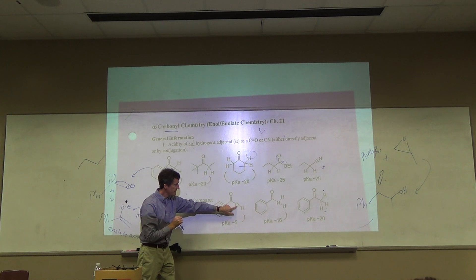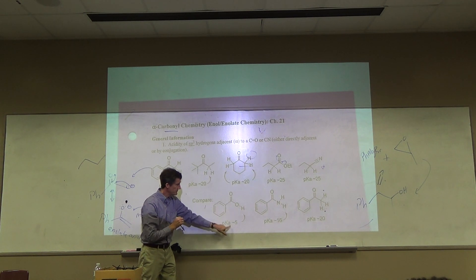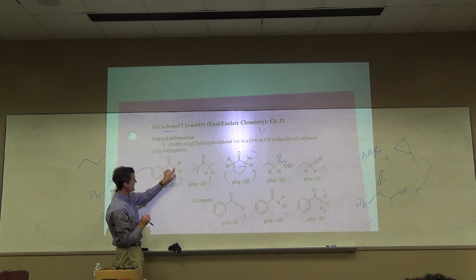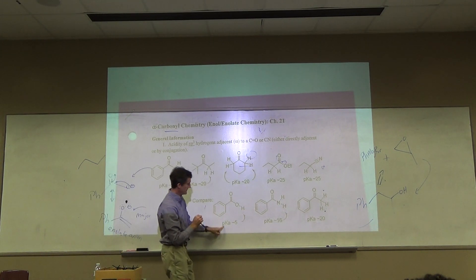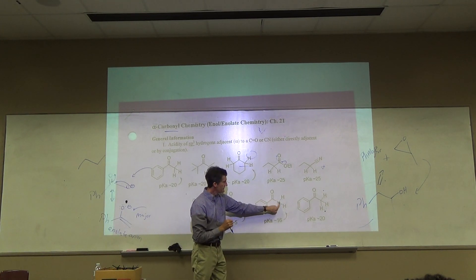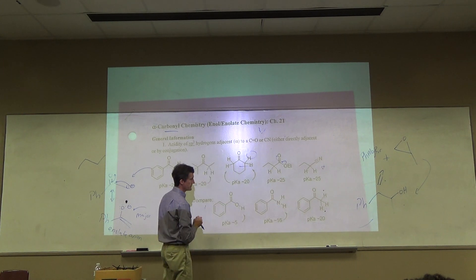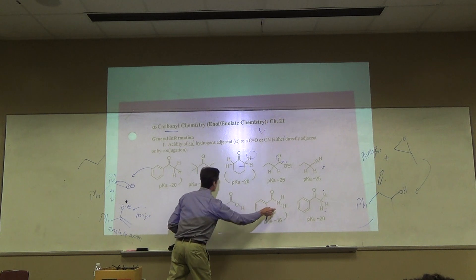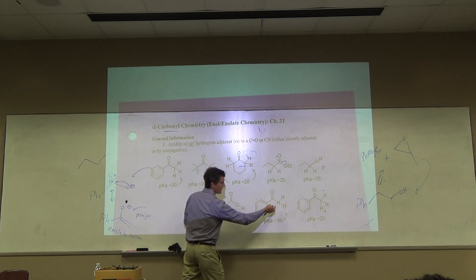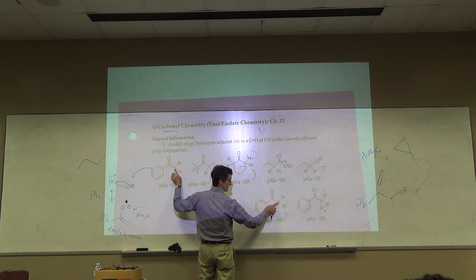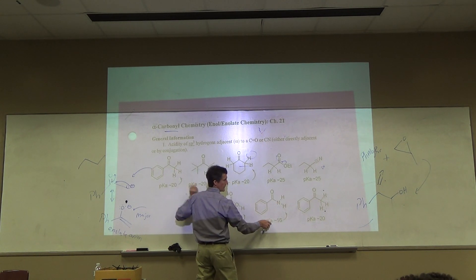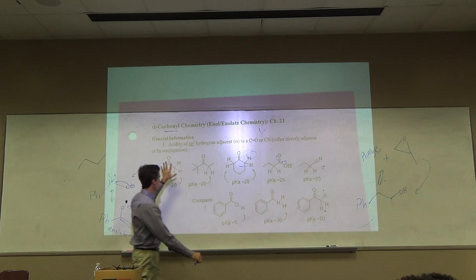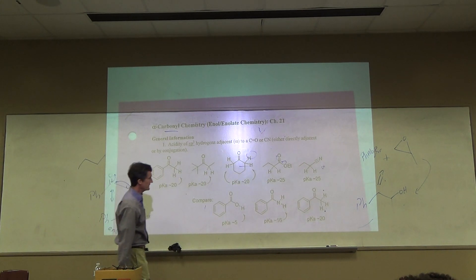Making anion here, you can also do, but it's not as acidic because some of the charge is on carbon. Amide, we never talked about their acidity. But an amide is more acidic than this because here the charge is on nitrogen, here it's on carbon. So it's a little bit more acidic.